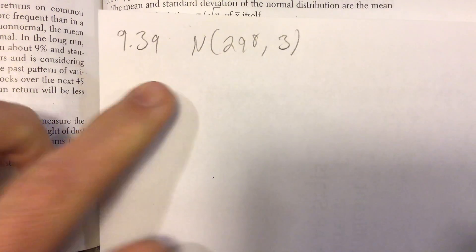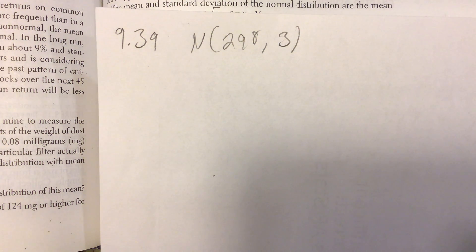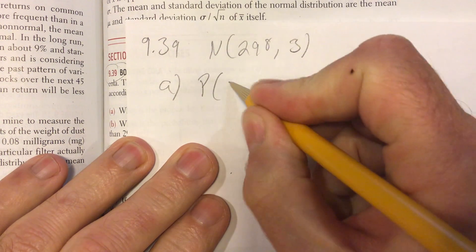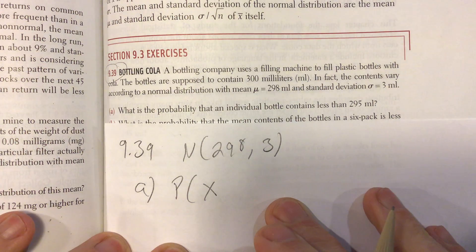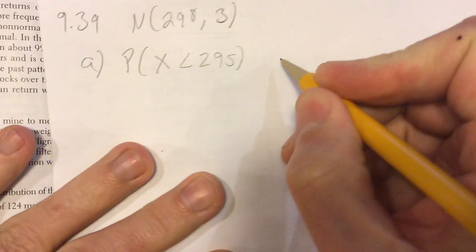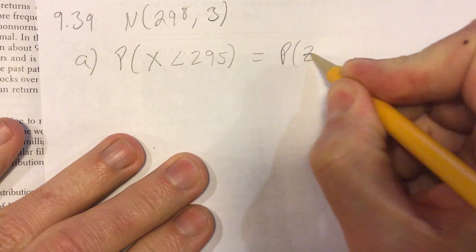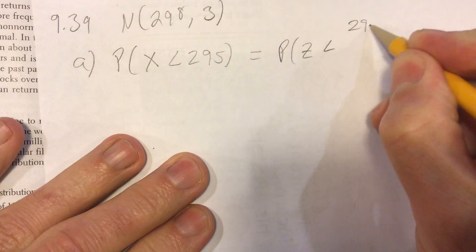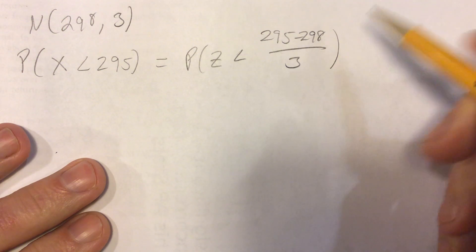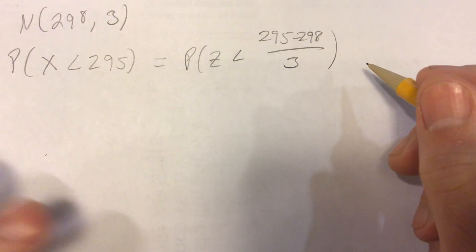Letter A: What's the probability that an individual bottle contains less than 295? Here's the good news - they said it's normal, so I don't have to worry about any checks. We're talking about an individual bottle, so I don't have to worry about my standard deviation formula. So what's the probability that X is less than 295? Let's get a Z score: (295-298)/3 equals negative 1. Piece of cake.